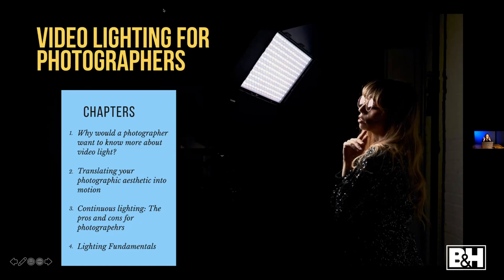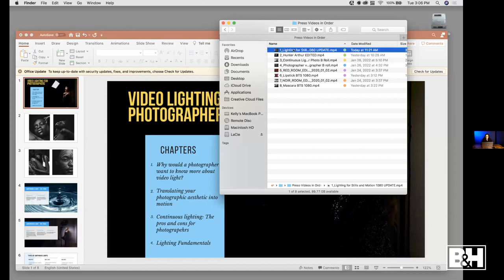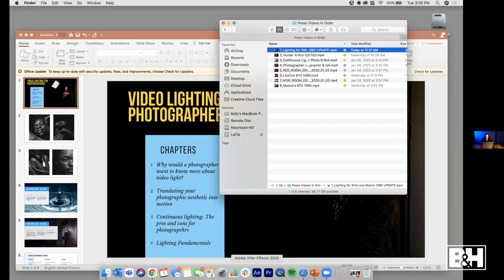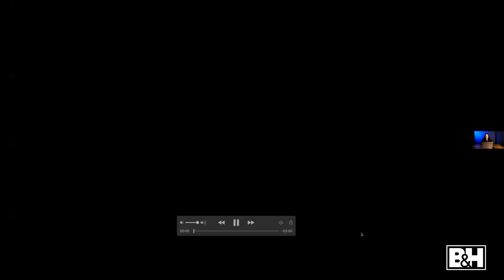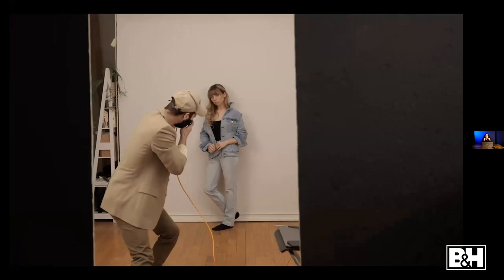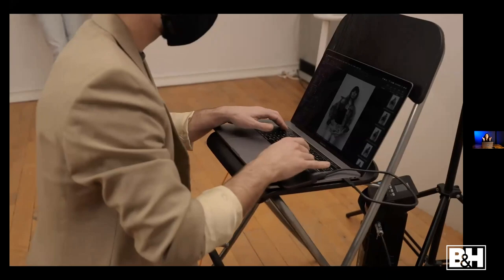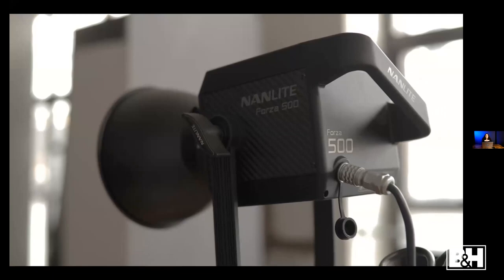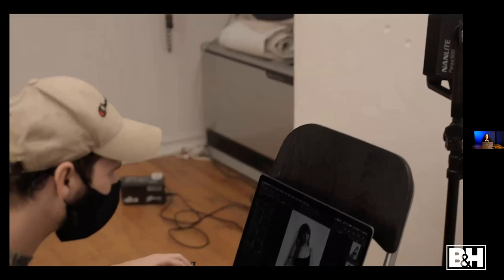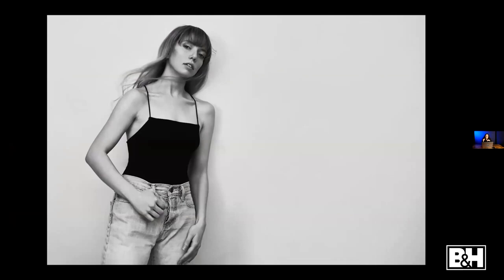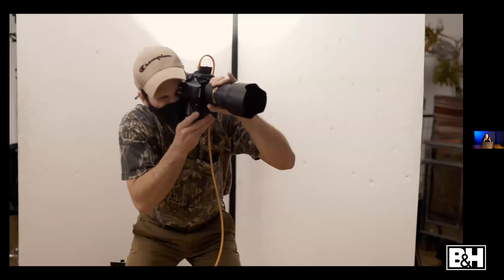I want to jump into using continuous light for both photo and video. We've been working with photographer Hunter Arthur, who has been given lots of different Nanlite lights to play with. His favorite lights are the Forza 500s — the most powerful monolight Nanlite currently has. They're a monolight with a Bowens mount, which allows you to put many different types of modifiers on your light.